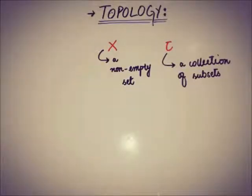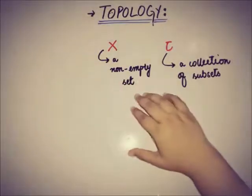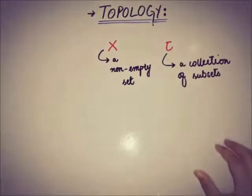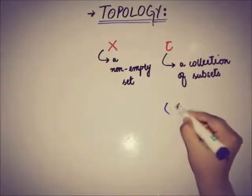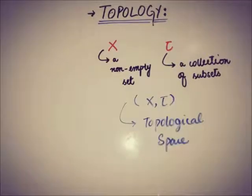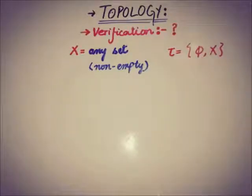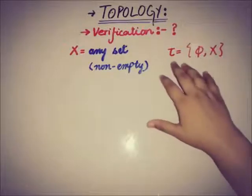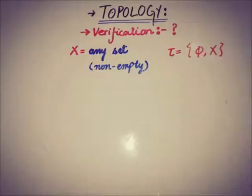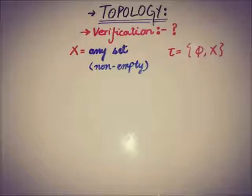Recalling from topological spaces: if there is a non-empty set X and a collection of subsets tau, together X and tau form a topological space. Now we will take an example of a set X and a collection of subsets and verify whether it is a topology on X or not. If we have a non-empty set X and a collection of subsets tau with two members — the empty set and X itself — we will verify this collection satisfies the three basic properties.